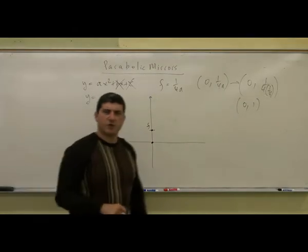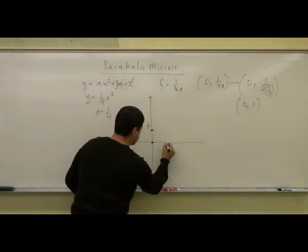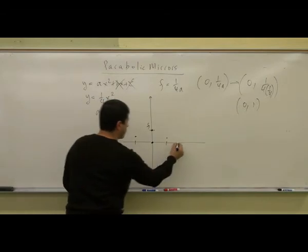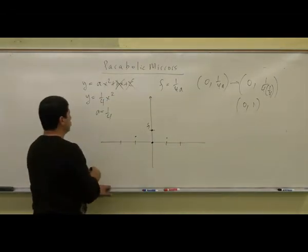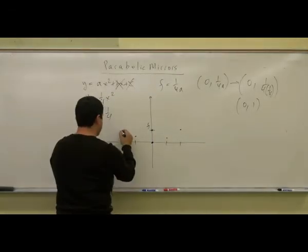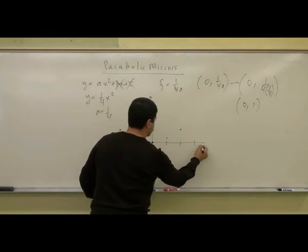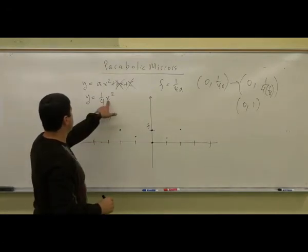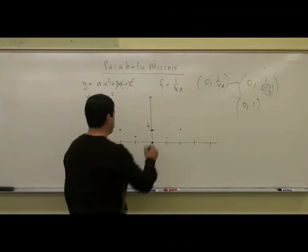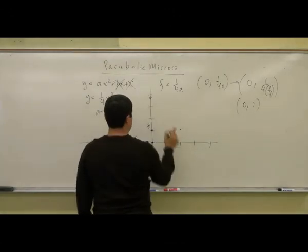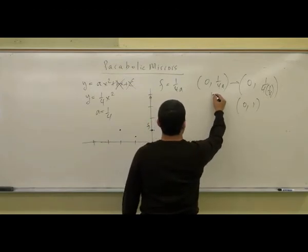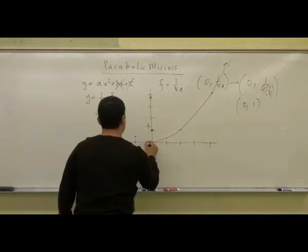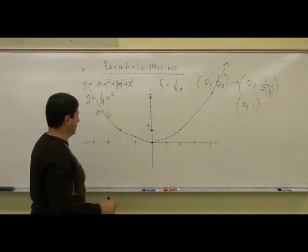Let's draw a rough diagram of the parabola. When x equals ±1, y = 1/4. When x equals ±2, y = 1. When x equals ±4, y = 4² / 4 = 4. So the parabola opens upward like this.